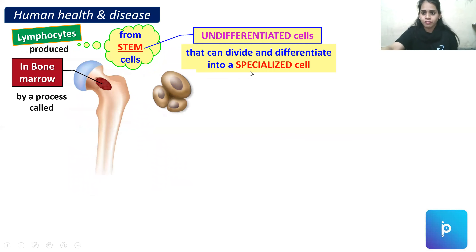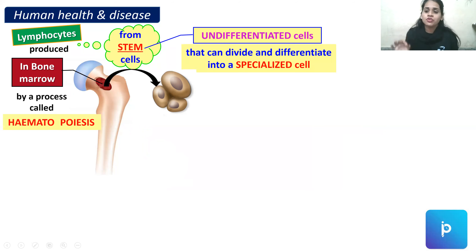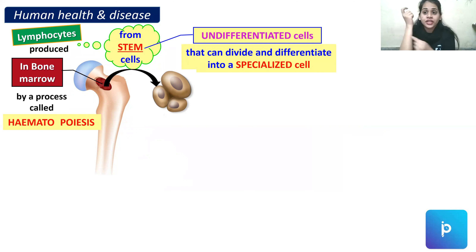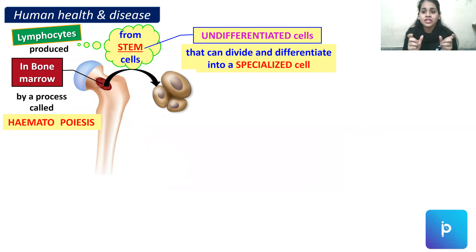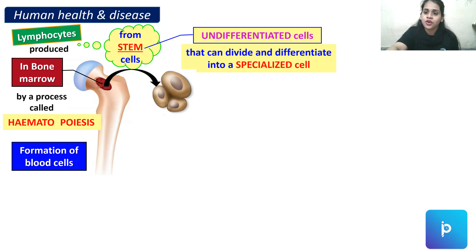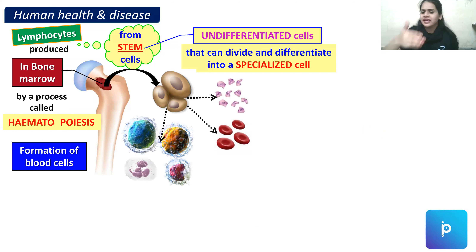Stem cells are produced inside the bone marrow by a process called hematopoiesis. Hemato means blood and poiesis means formation, so hematopoiesis is the formation of blood cells. These stem cells are able to form different types of cells — WBCs of various types, liver cells, nerve cells — any type of cell in our body.